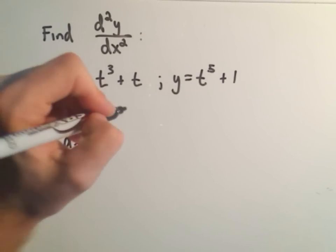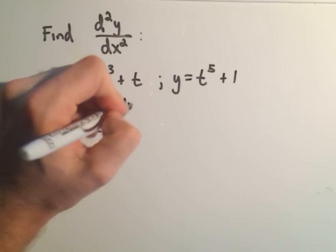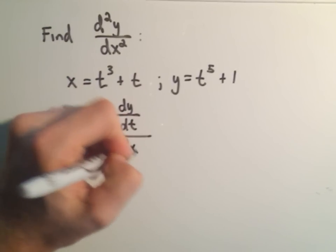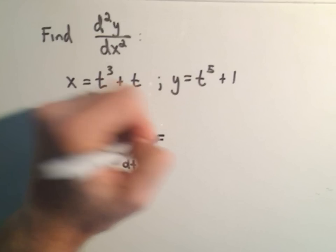But again, we know the derivative of y with respect to x is the derivative of y with respect to t over dx dt. Okay, well the derivative of y with respect to t would just be 5t to the fourth.